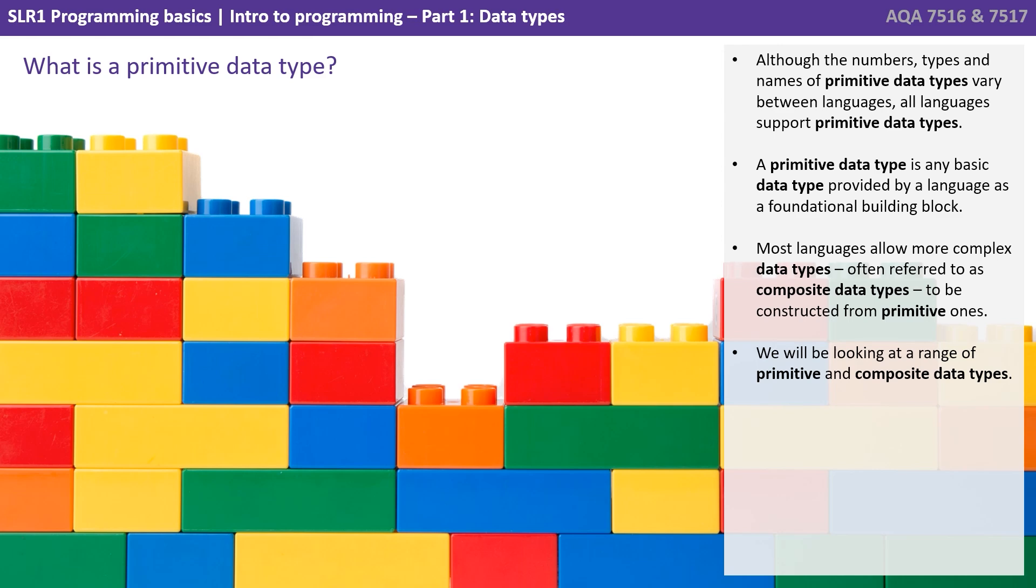Although the numbers, types and names of primitive data types vary between languages, all languages support primitive data types. A primitive data type is any basic data type provided by a language as a foundational building block. Most languages allow more complex data types, often referred to as composite data types, to be constructed from primitive ones. We'll be looking at a range of primitive and composite data types.